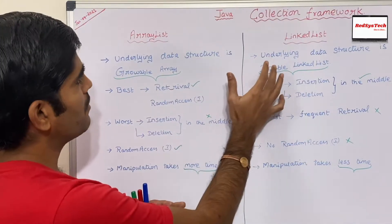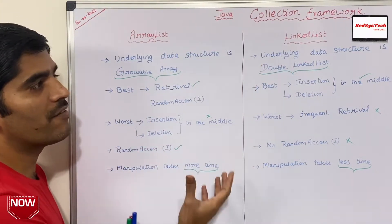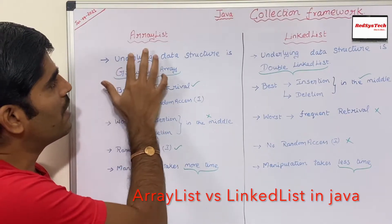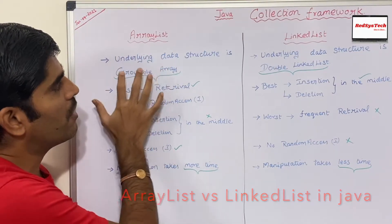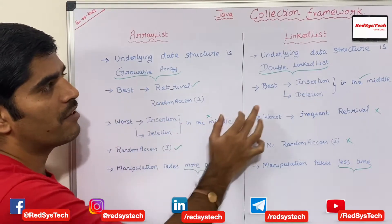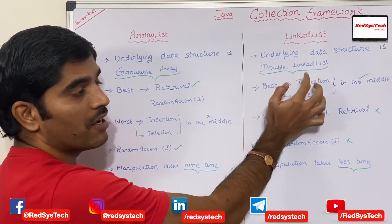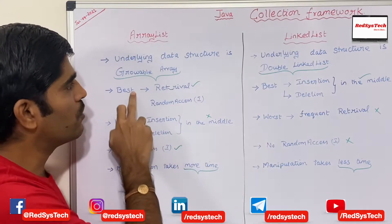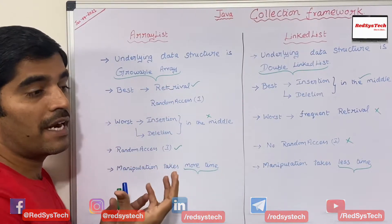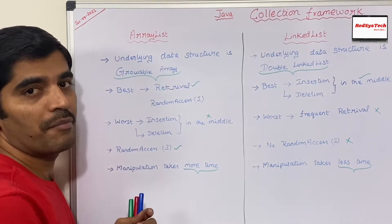ArrayList and LinkedList. I have written some points here to make it very clear, easy to understand, and easy to remember. For ArrayList, the underlying data structure is a growable array. But in case of LinkedList, the underlying data structure is a doubly linked list. The growable array means the array is like a static one but ArrayList is like a dynamic one.